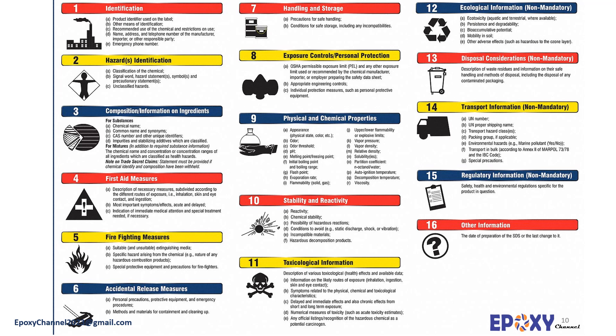Section 7 provides handling and storage guides. Here, precautions for safe handling, conditions for safe storage including any incompatibilities, and conditions for specific use are provided. Section 8 presents the exposure controls and personal protection. Here, control parameters and exposure controls are provided. Section 9 deals with physical and chemical properties of the product — information on basic physical and chemical properties and other relative information can be found here. Section 10 concerns stability and reactivity of the product: reactivity, chemical stability, possibility of hazardous reactions, conditions to avoid, incompatible materials, and hazardous decomposition products are presented here.